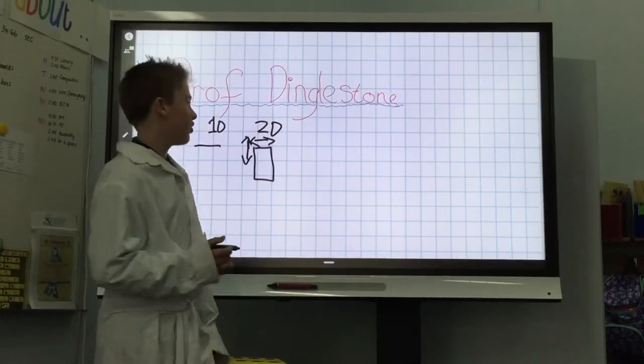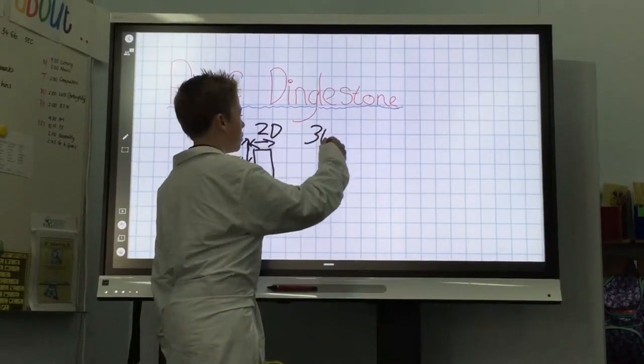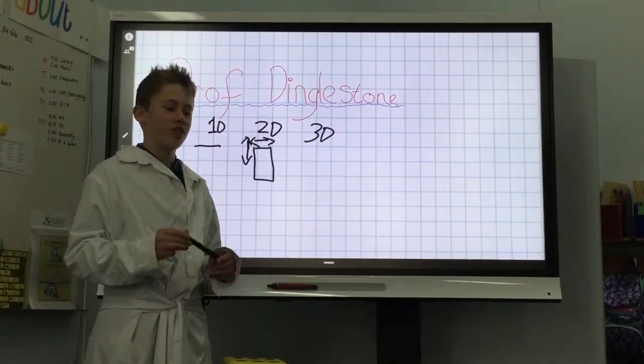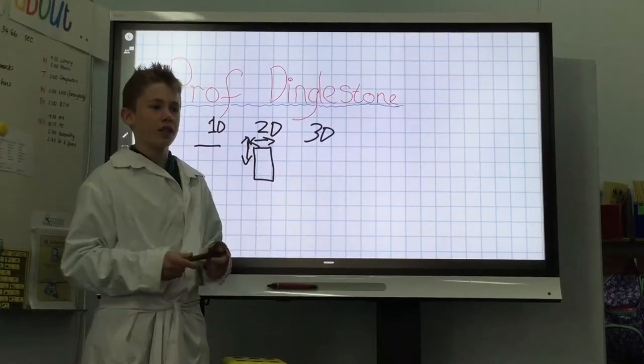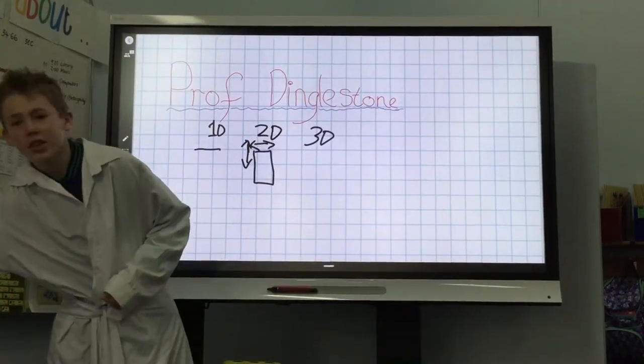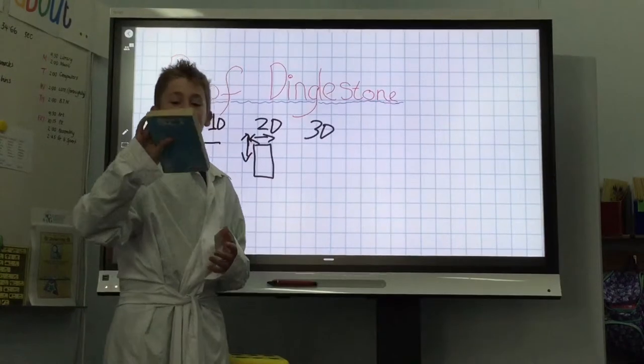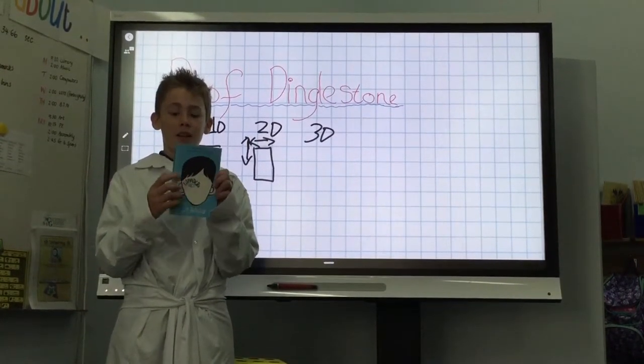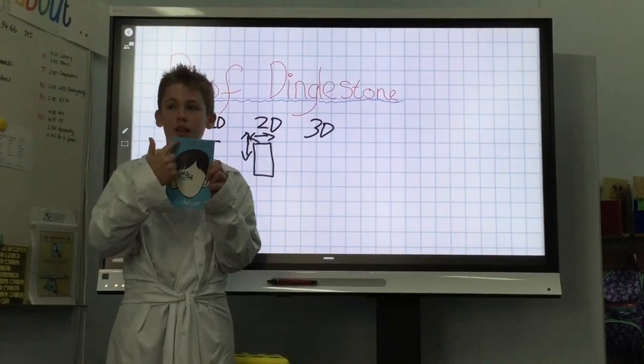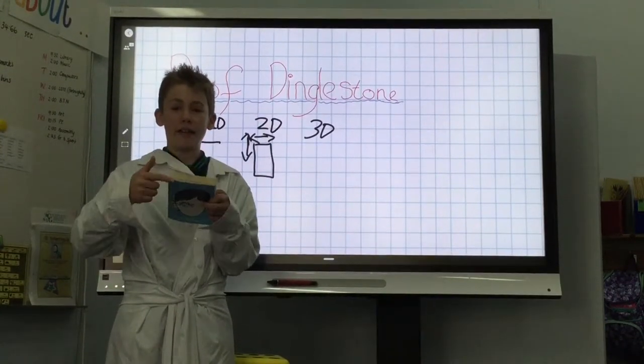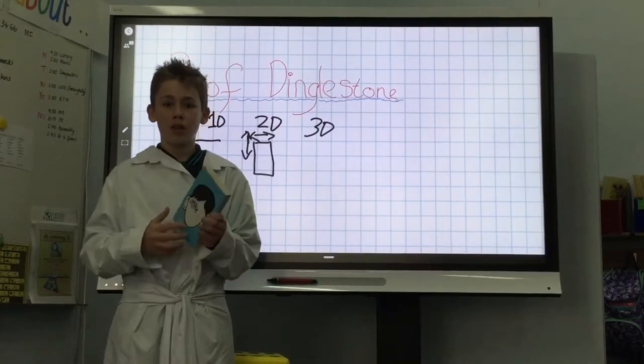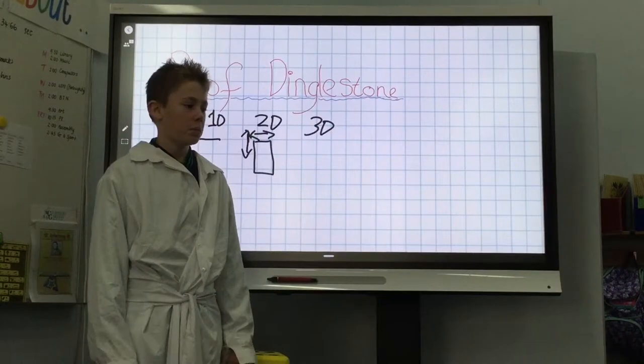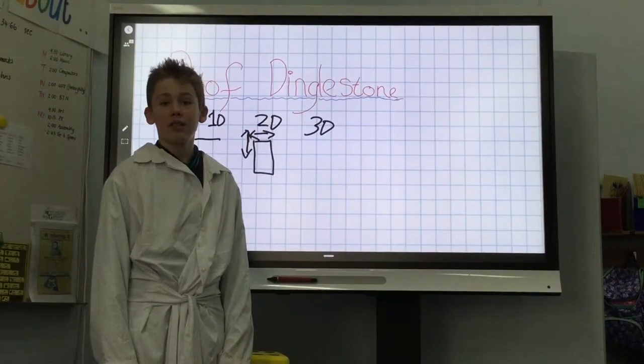3D is a lot more complex. So, this is three dimensions. Three directions, if you like. I can't draw that up, but I will grab a three-dimensional shape. A book. This is a rectangular prism. And it goes up and down, left and right, and it has depth. And depth is the one that makes it 3D. Well, pretty much everything you see is 3D.